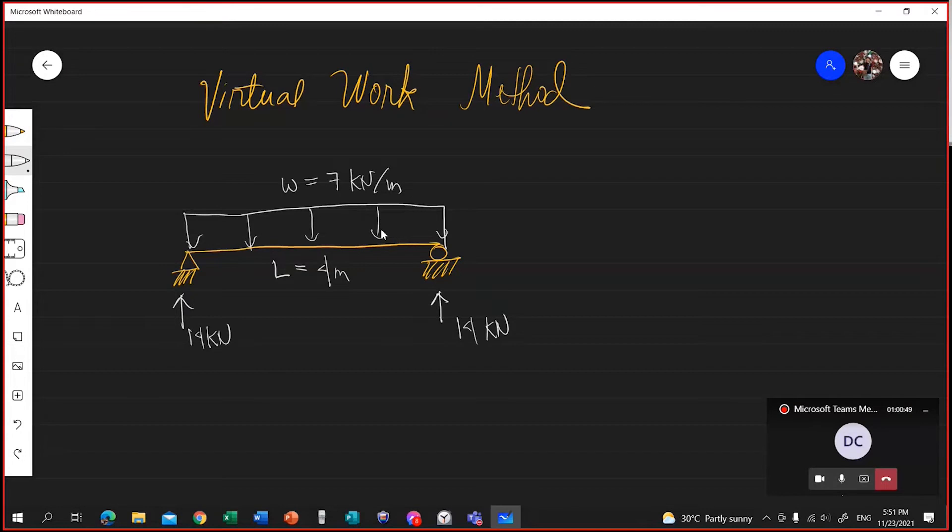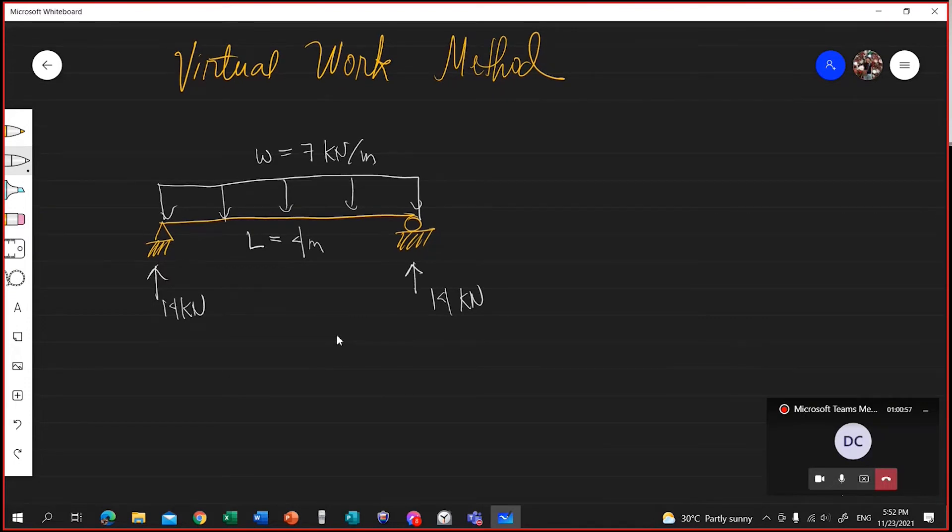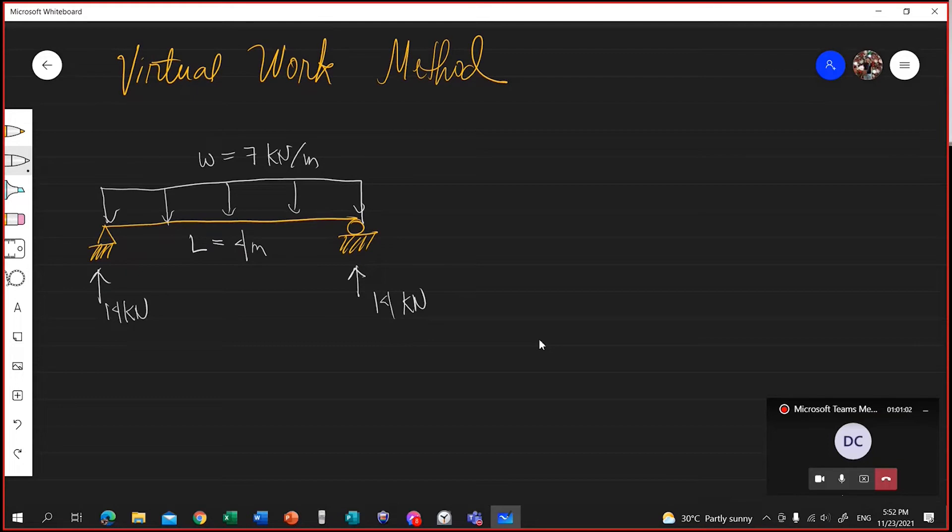So now, with the virtual work method, we are trying to solve for the deflection at the mid-span. Virtual work method or sometimes the unit load method. You take the original beam or the given beam. This is the given beam, and you place a unit load. That's why it's called unit load.